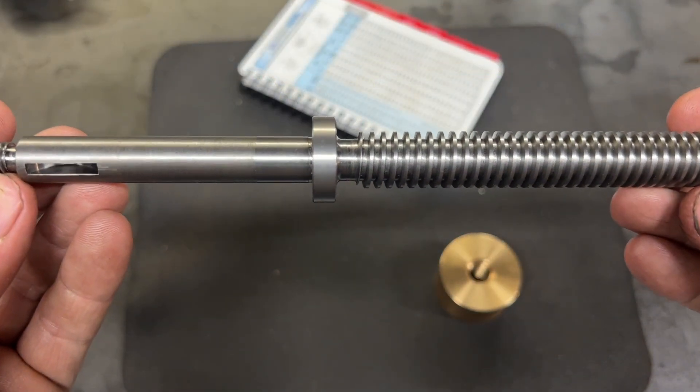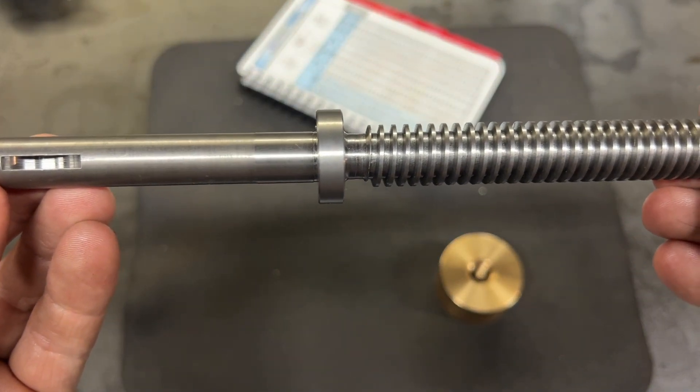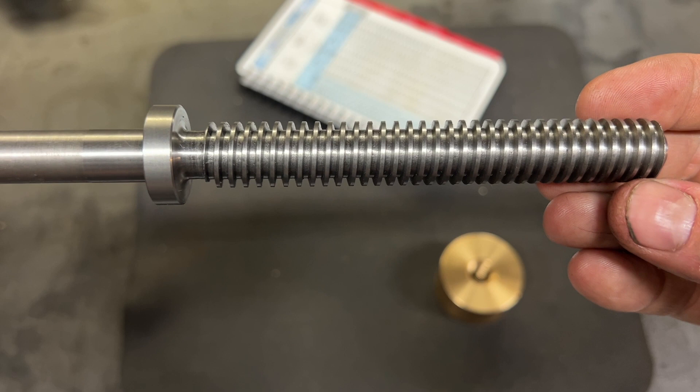Well, there it is, one 5/8-8 TPI tailstock feed screw.